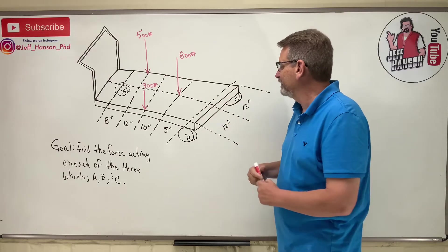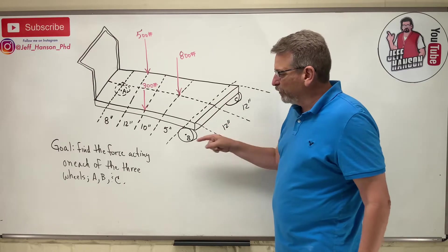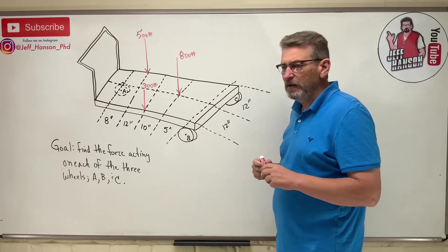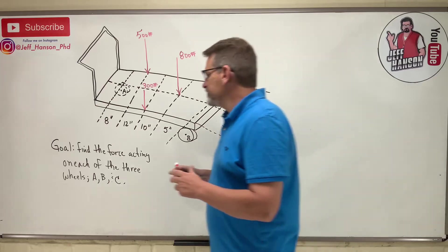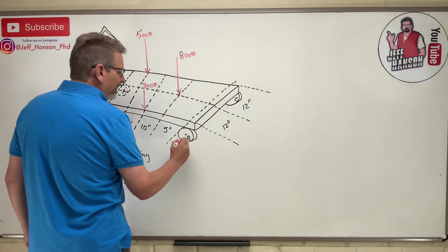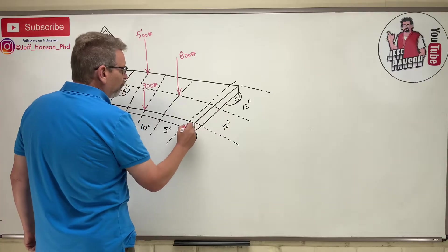It says find the force acting on each one of the wheels: A, B, and C. Again, wheels on the ground, so what does the ground do to the wheels? You wind up with this, and I'm just going to draw it all the way up to this point, like above the wheels here.